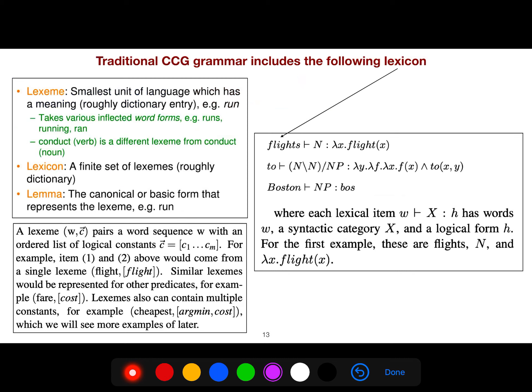Traditional CCG grammar includes the following lexicon. Flight is noun, lambda x to flight of x, and so on. Where each lexicon, this word goes to this syntax and this grammar, this logical form h. h is logical form. You should know what is lexeme. Lexeme is the smallest unit of language which has a meaning, for example, run. Lexicon is different. Lexicon is finite set of lexemes. Your dictionary is lexicon. And lemma is in elementary NLP, it's canonical or basic form that represents lexeme. There are lots of libraries nowadays in Python you can use it.